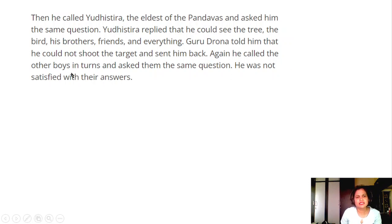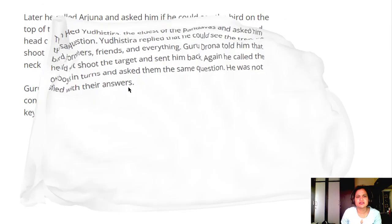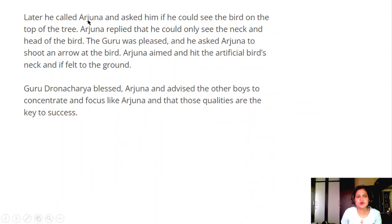Again he called the other boys in turns and asked them the same question. He was not satisfied with their answers. Later he called Arjuna and asked him if he could see the bird on the top of the tree. Arjuna replied that he could only see the neck and head of the bird.